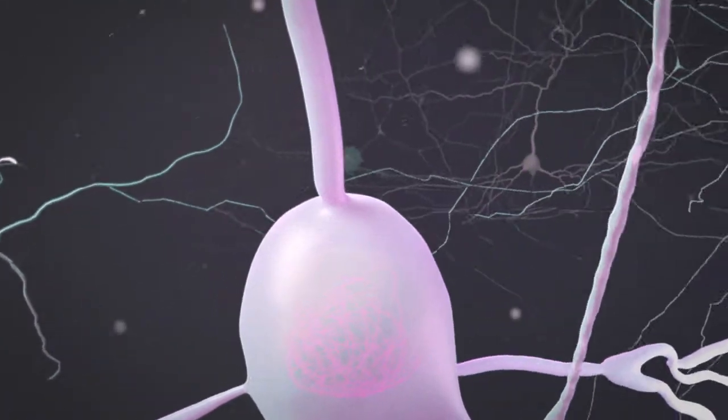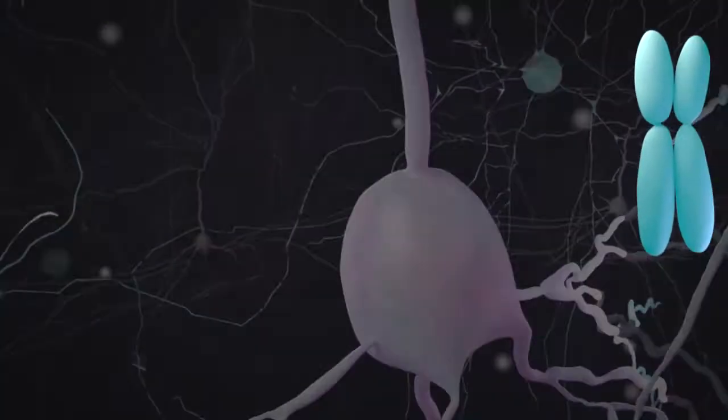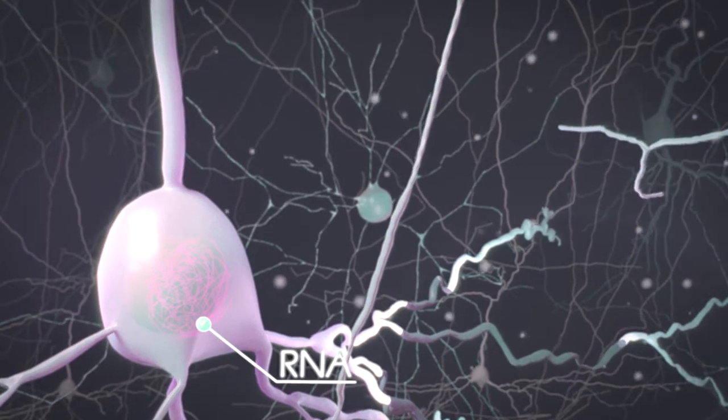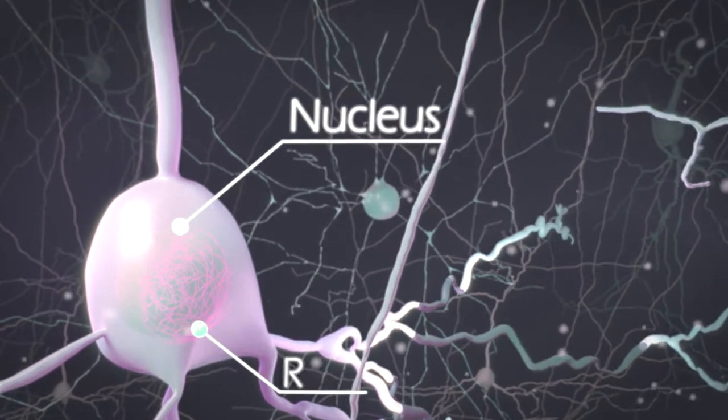This mutation, which occurs at the chromosome 9 open reading frame 72 locus, causes aggregates of RNA in and around the nucleus of these cells.